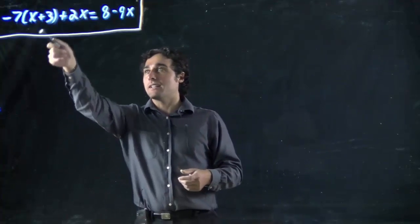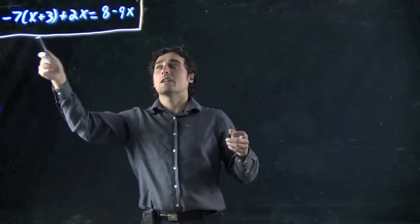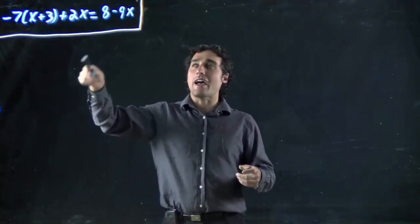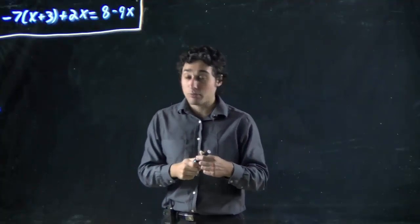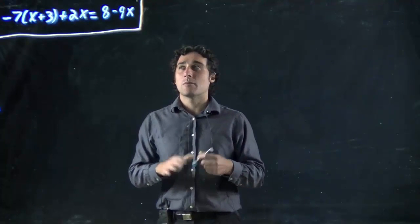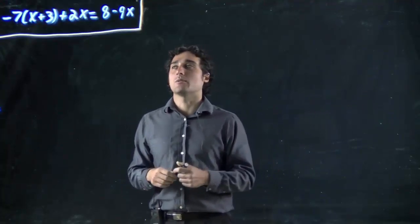So what do we got? Minus 7 times x plus 3, then that plus 2x, and all of that is equal to 8 minus 9x. So, pretty big whopping looking equation, but we're going to see if we just follow the same steps we've been doing.